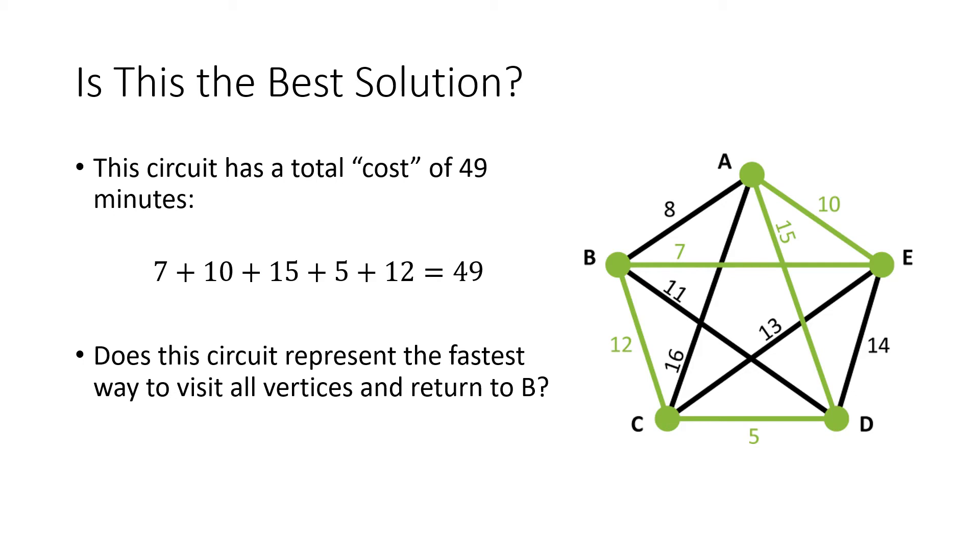So is this the best solution? That's the solution that we got. We went from B to E, and then to A, and then to D, and then to C, and then back to B. If we add up those five numbers, we get a cost for this circuit of 49 minutes.